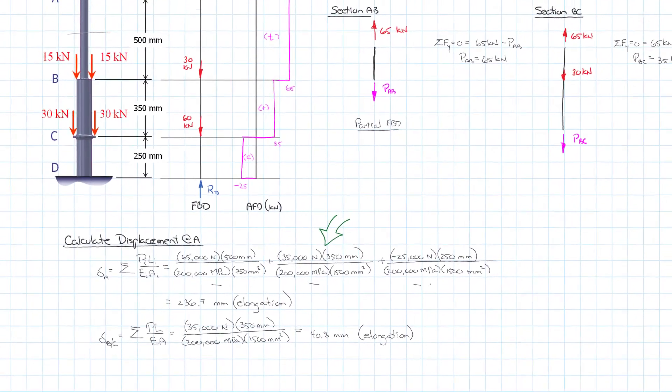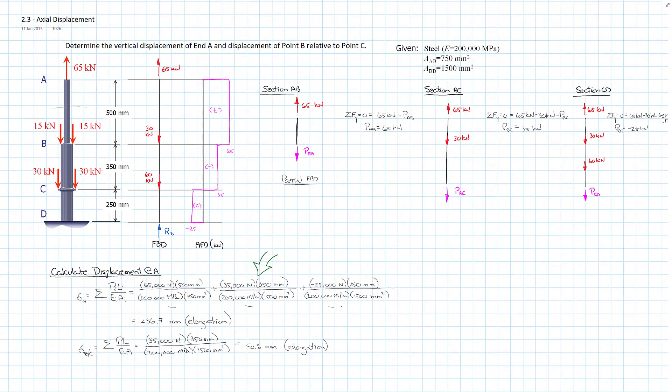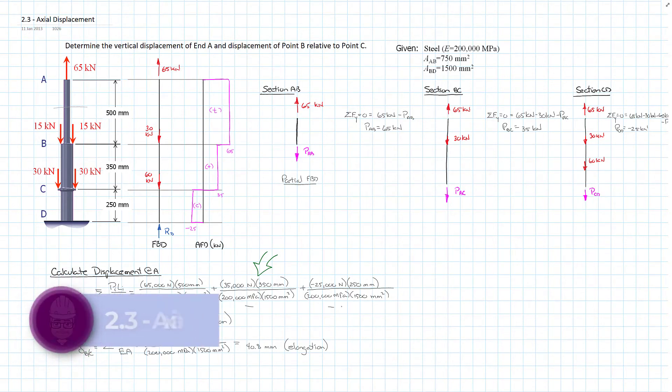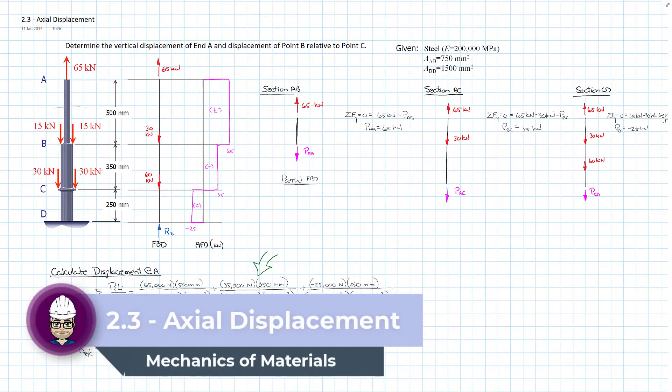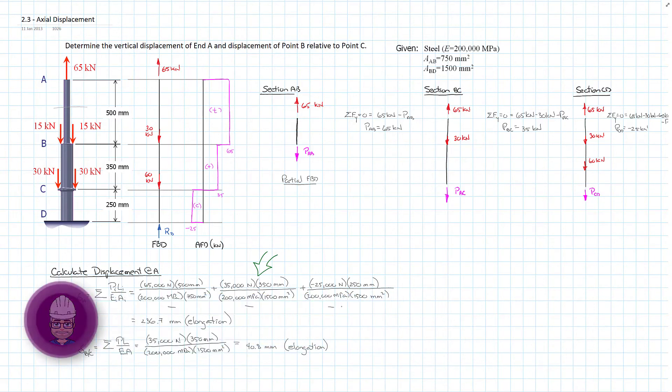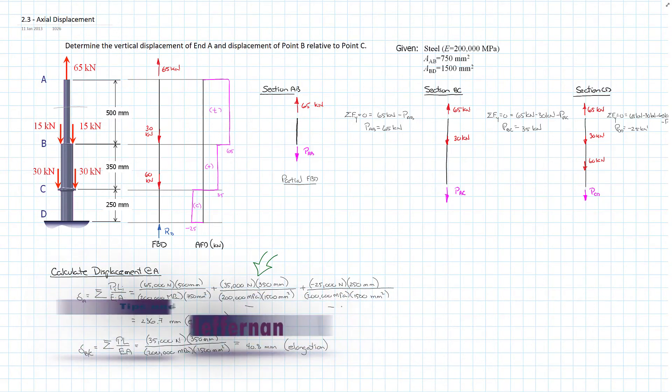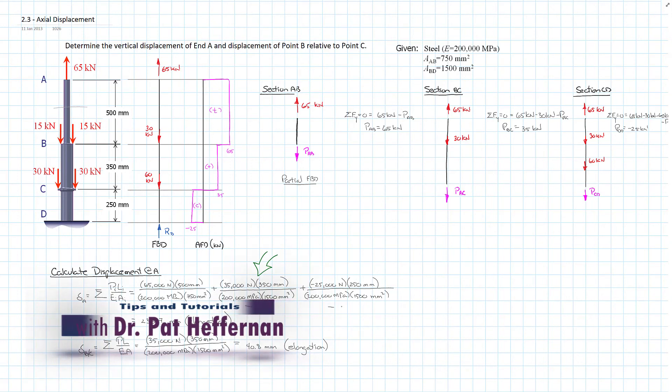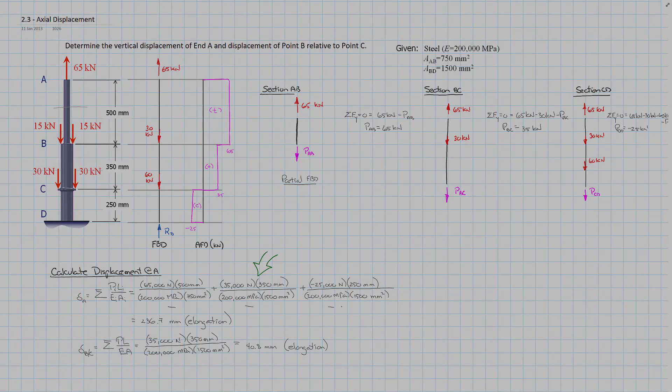So that's the problem. Here we see the importance of being able to discern the length over which the internal load is being applied, and then the area or modulus associated with that. If those change, the areas change or the moduli change, you have to break our section up into those different parts. We just do the sum of all the different parts and we get our overall elongation and our elongation B relative to C. Hopefully that was helpful to you, and we'll see you at the next one.